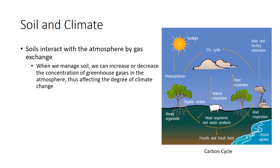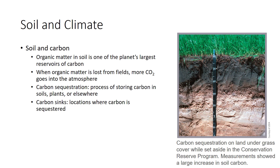Our changing global climate will affect growers and other soil users in ways we are only beginning to understand. Climate affects how we use the soil and, in turn, how we use the soil affects the climate. Soils interact with the atmosphere by gas exchange; some of these gases are greenhouse gases that trap heat in the atmosphere, such as carbon dioxide. According to 2007 data, the agricultural sector contributes about 6% of the world's greenhouse gas emissions. Soil is one of the planet's largest reservoirs of carbon in the form of organic matter. If we lose soil organic matter from fields, more carbon dioxide goes into the atmosphere and climate change is promoted. If we increase soil organic matter, carbon dioxide is withdrawn from the atmosphere and climate change is moderated. Modern conservation tillage increases soil organic matter while older conventional tillage reduces it.